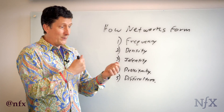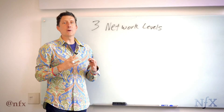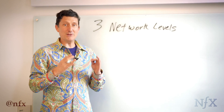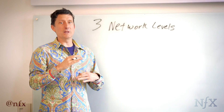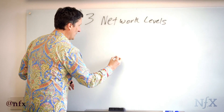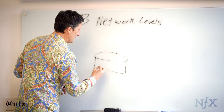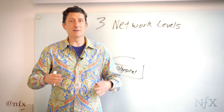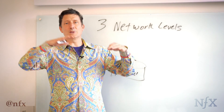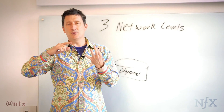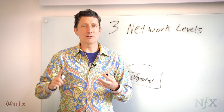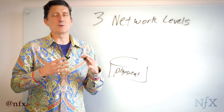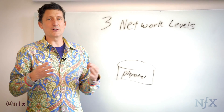As we use network math and network thinking to explain the world, it's interesting to notice there are basically three network levels all interacting with each other. The first one has been around forever: the physical world. You have a physical network — cities, streets, gas lines, electric lines, water mains, cars, offices, and lights. This physical network drives proximity, density, frequency, and identity formation. There is a physical infrastructure to our world that changes how our networks function around us.